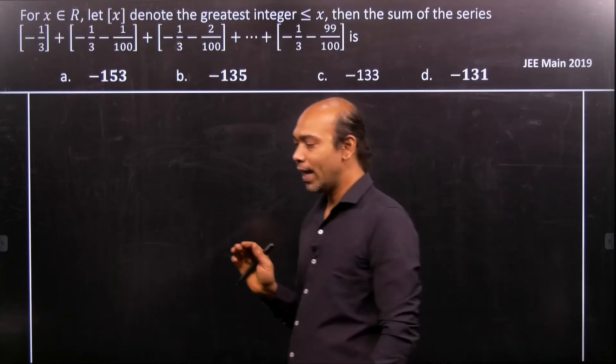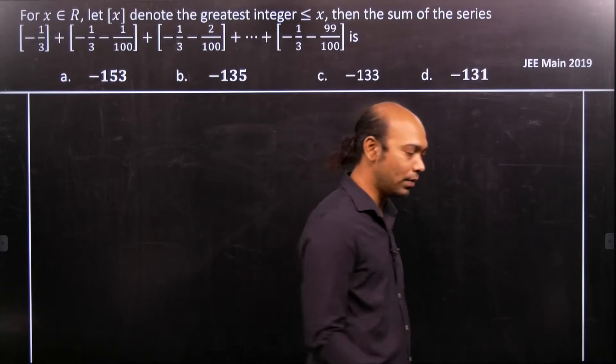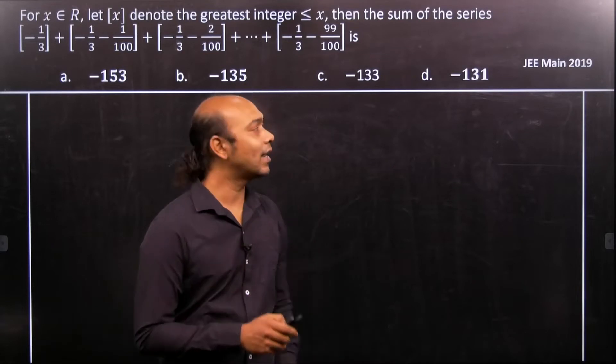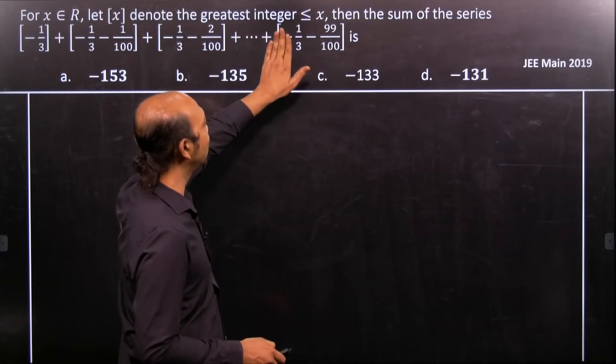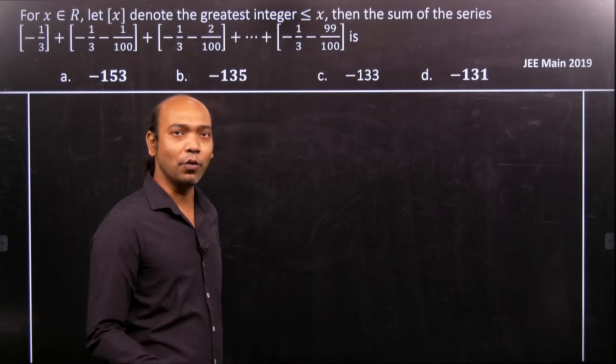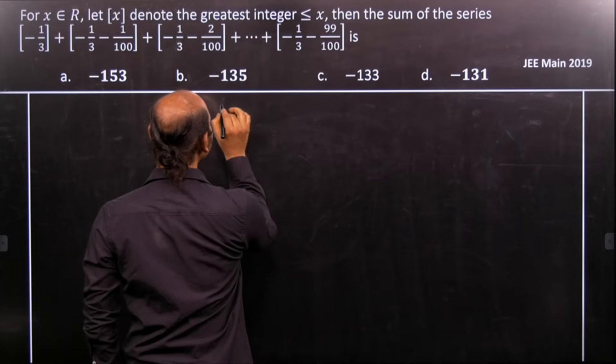First we have to observe one important thing for this particular problem. Each of the terms in that function is actually minus 1 by 3, 99 by 100, and all that stuff. Therefore this series can be easily written as, if I consider it as a sum...